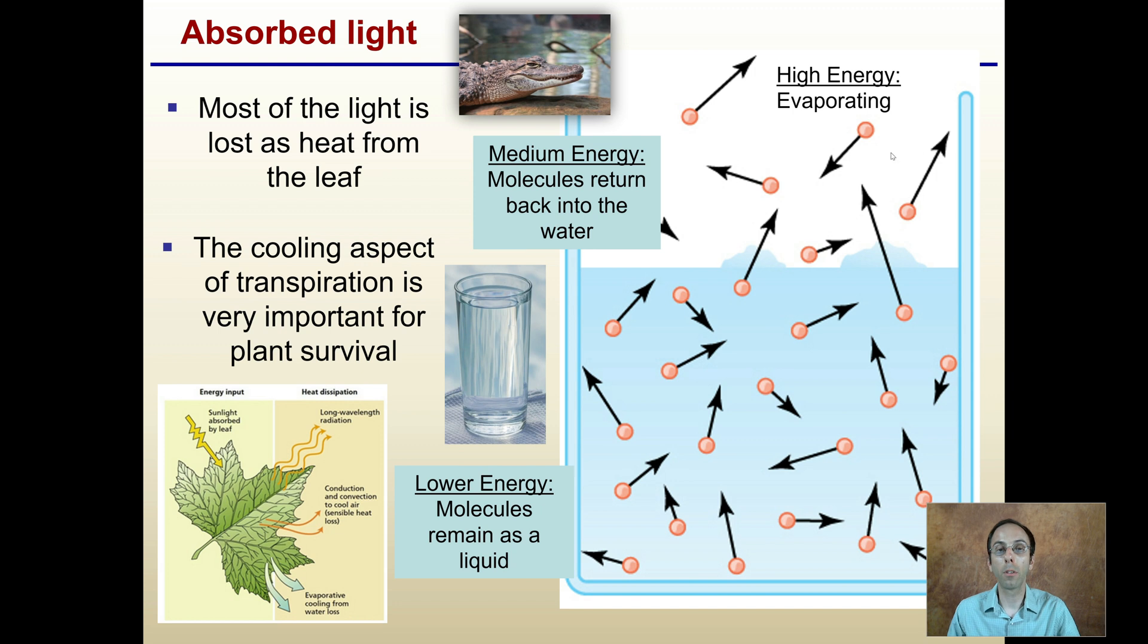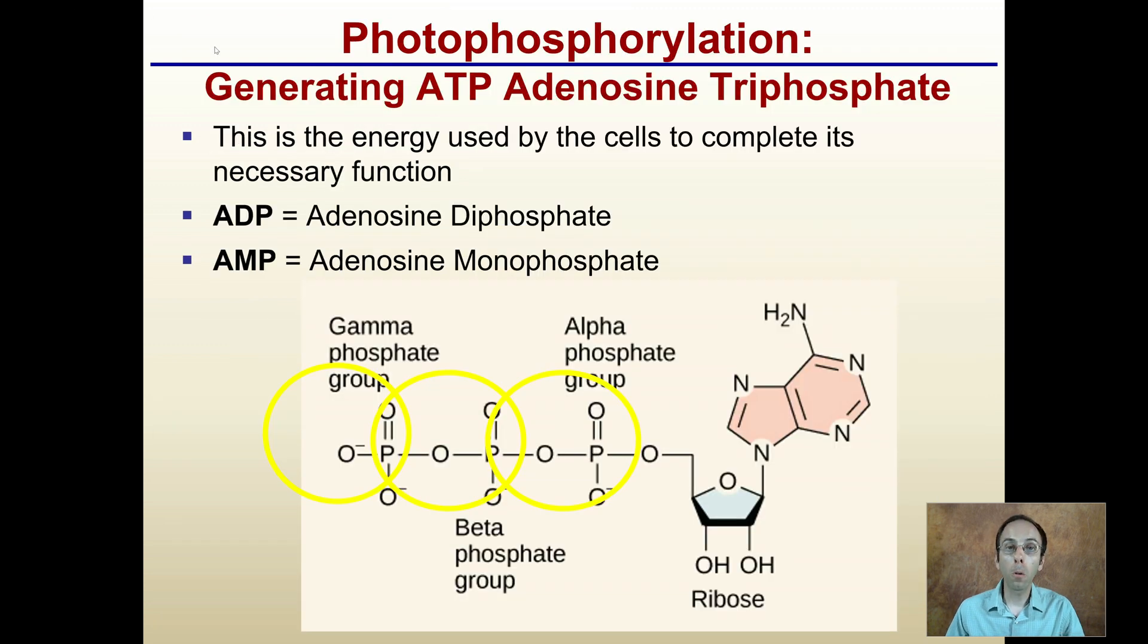We have photophosphorylation, which is generating ATP, adenosine triphosphate. This is the energy used by cells to complete necessary functions. That's the highest level, adenosine triphosphate. Only having two phosphates, adenosine diphosphate, is the next lowest. The lowest energy form is AMP, adenosine monophosphate. The adenosine triphosphate, ATP, is the energy currency of the cell, so it can complete many necessary and life-supporting functions.